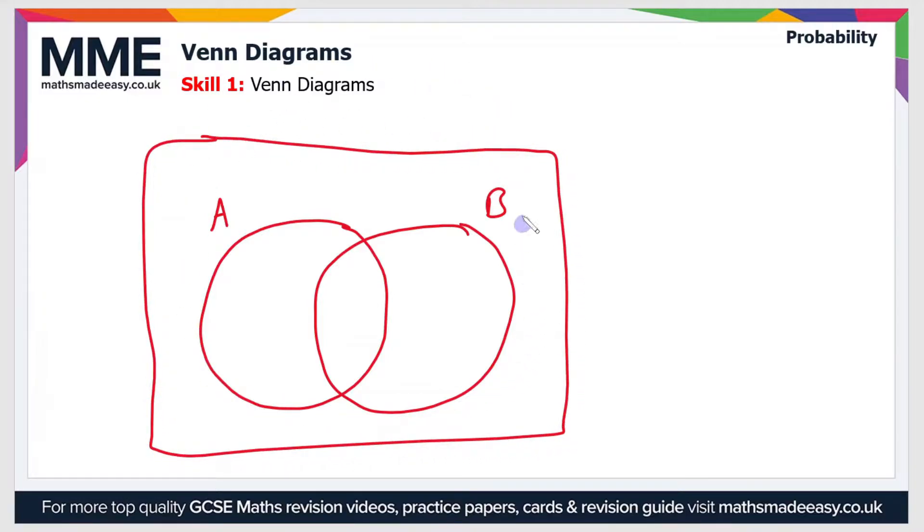So everything should be included in the box, and any pieces of data that belong in set A should be inside the A circle, and any that belong in set B should be inside the B circle. Now if there's any that belong in both, so that's both A and B, they should go into the intersection between the two circles.